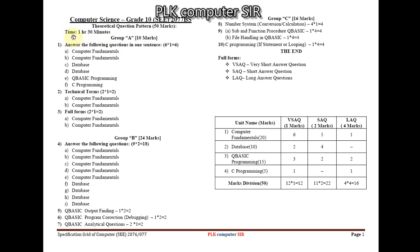For the theoretical exam, you have one hour 30 minutes and there are three groups: Group A, Group B, and Group C. Group A carries 10 marks, Group B carries 24 marks, and Group C carries 16 marks — altogether 50 marks. Group A consists of very short question answers.